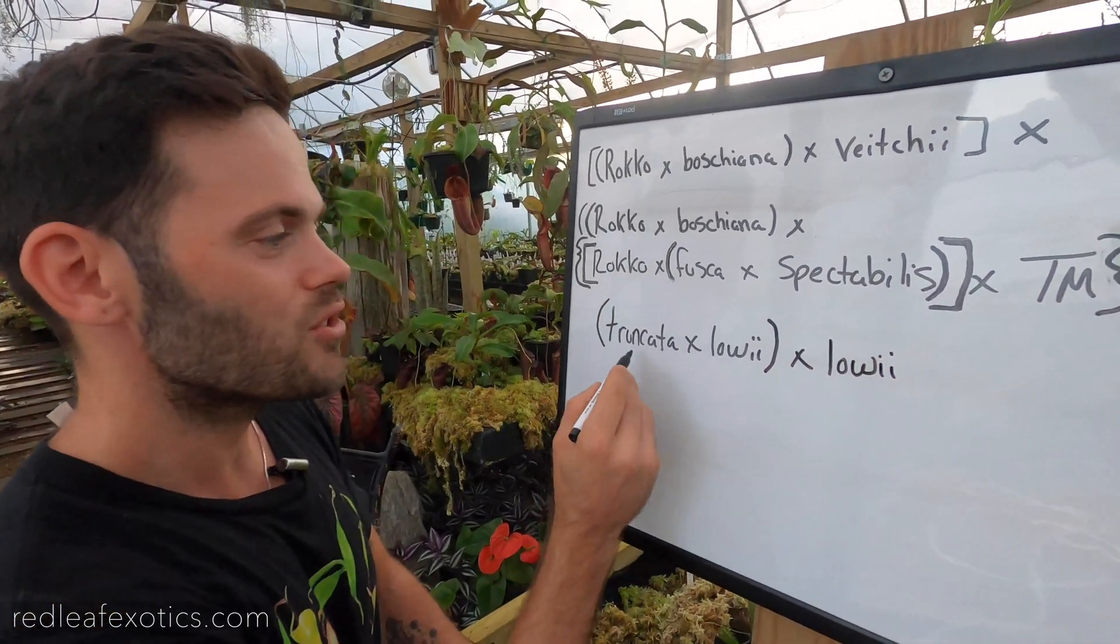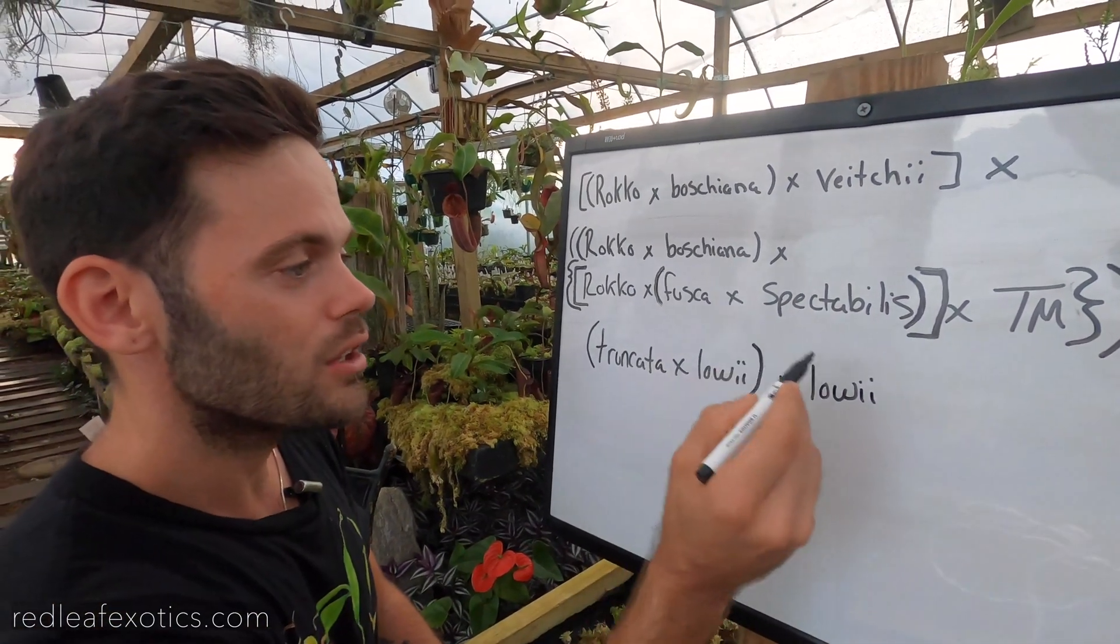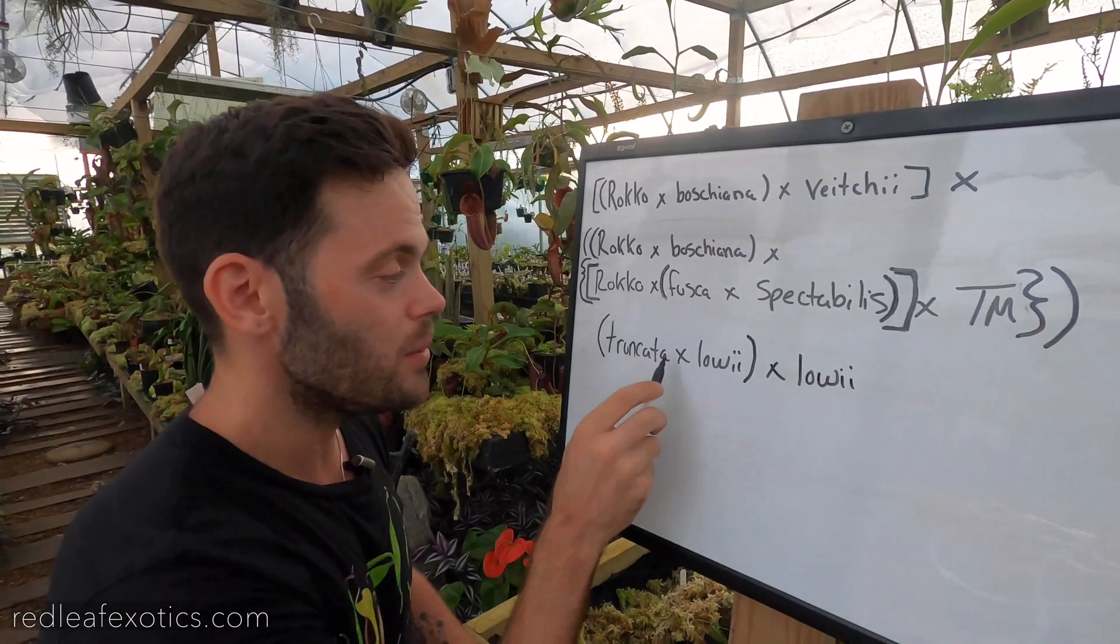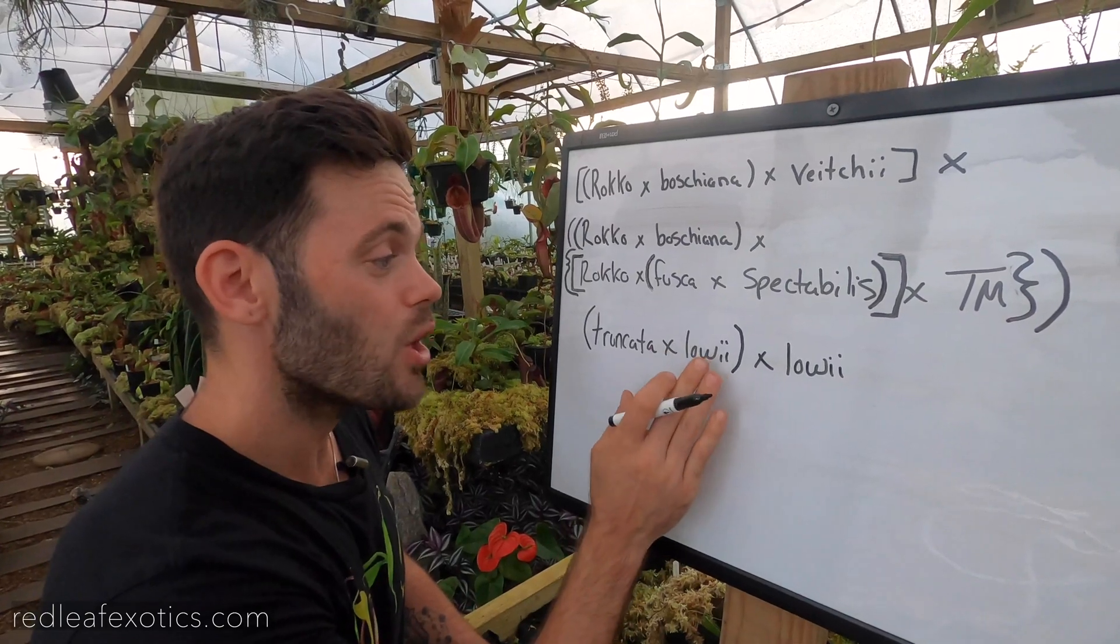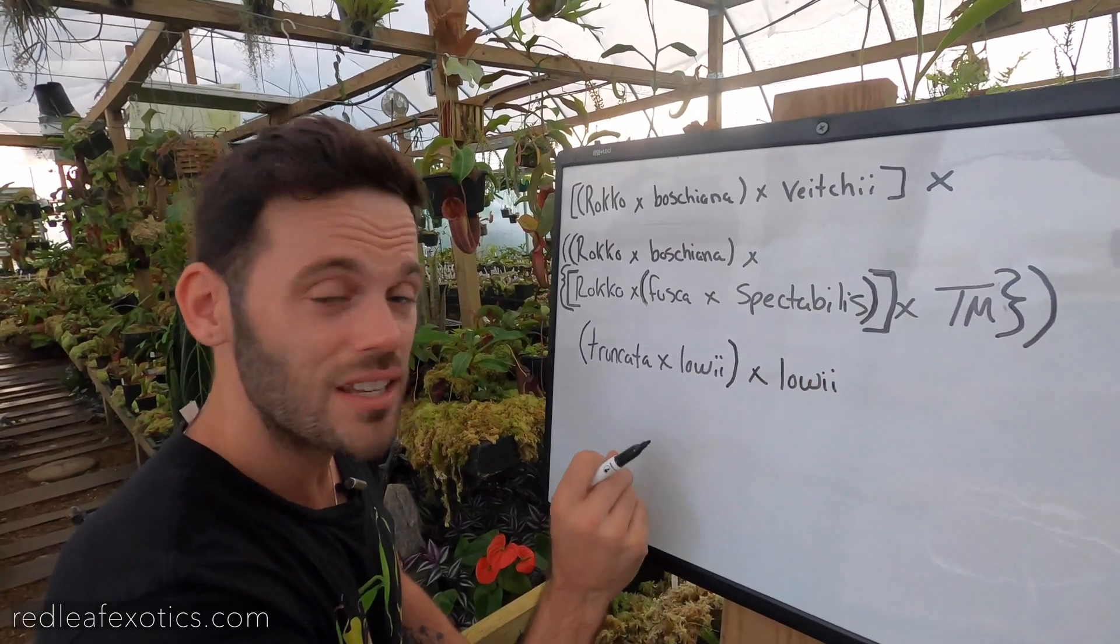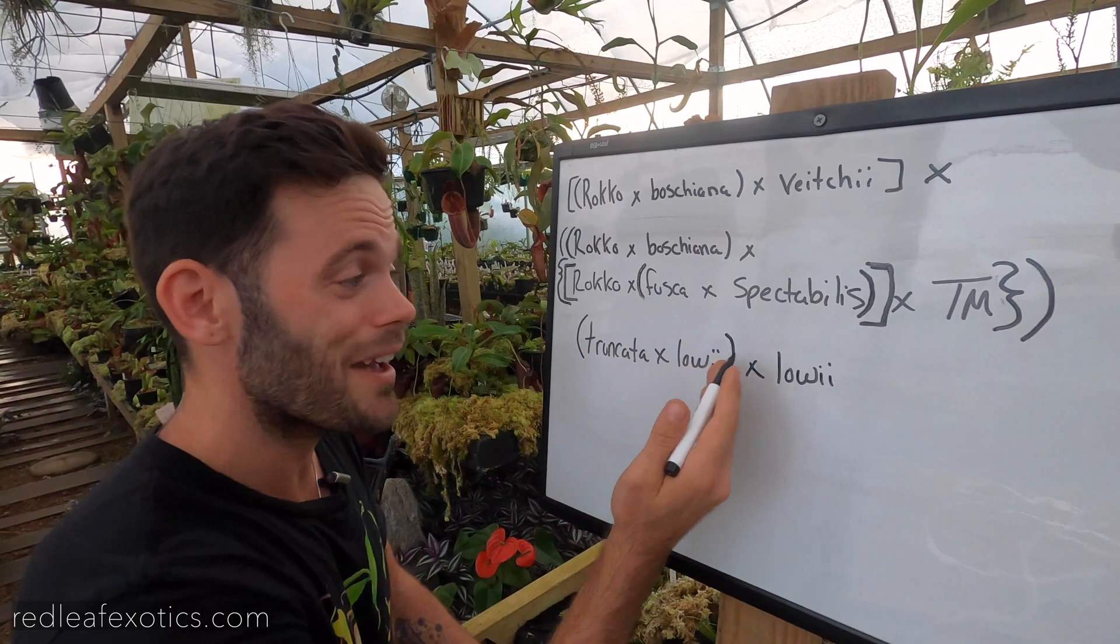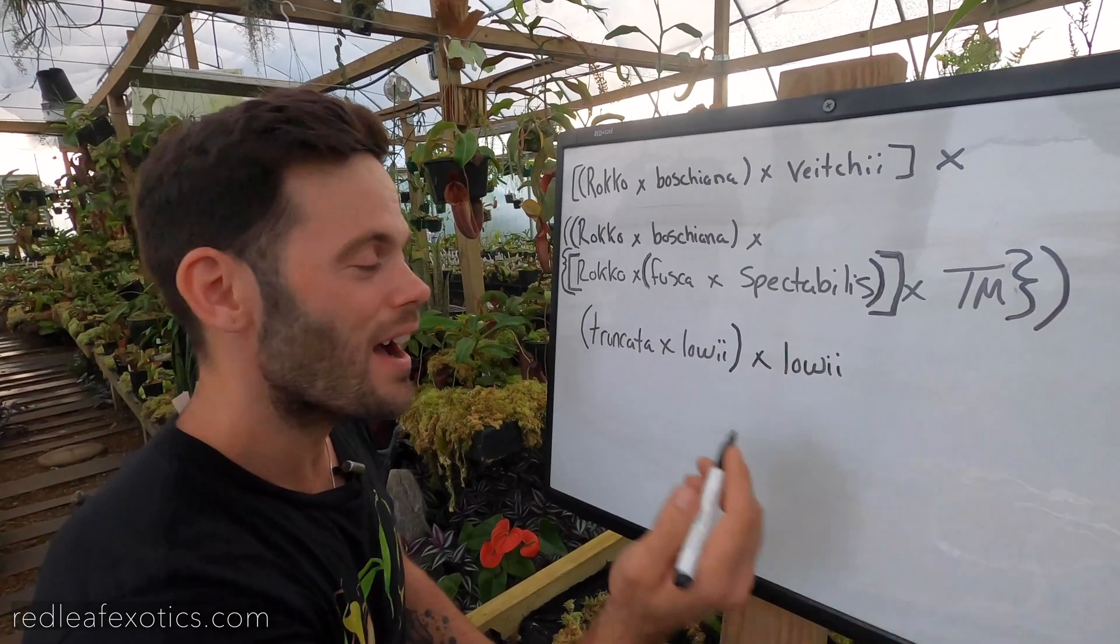This sounds nice. So you'd have Truncata-Loeii cross Loeii. And remember the female parent always goes first. So let's say we have Truncata-Loeii crossed with Loeii. We get our seeds, they grow up and they're called Truncata-Loeii cross Loeii. And then I breed it with Vichii.